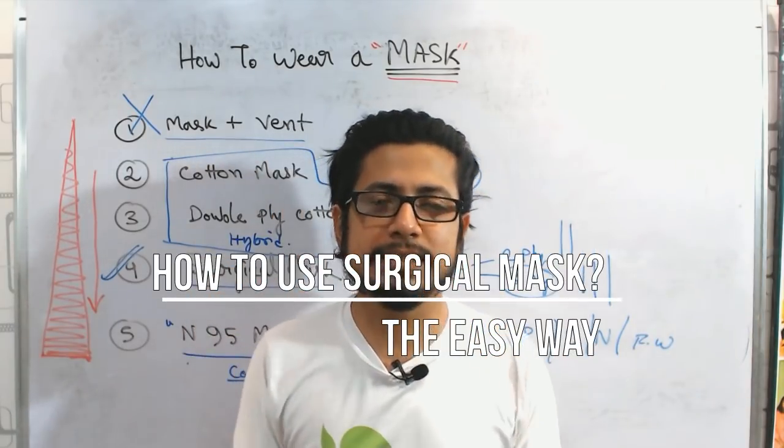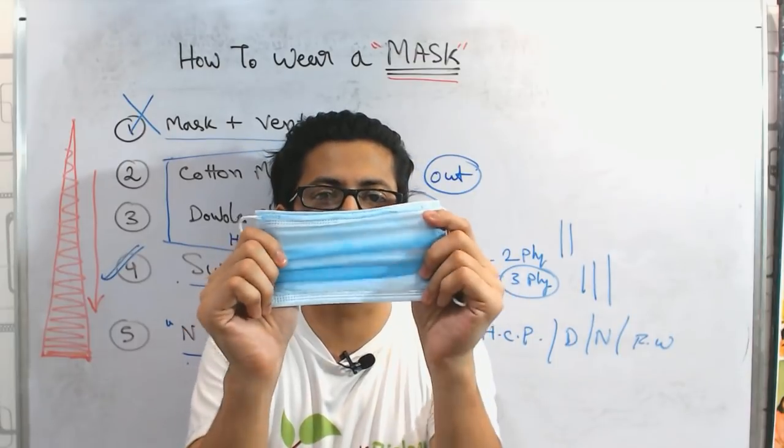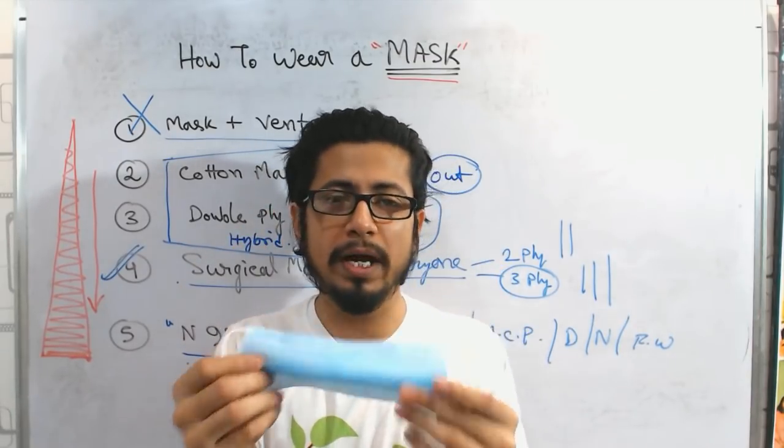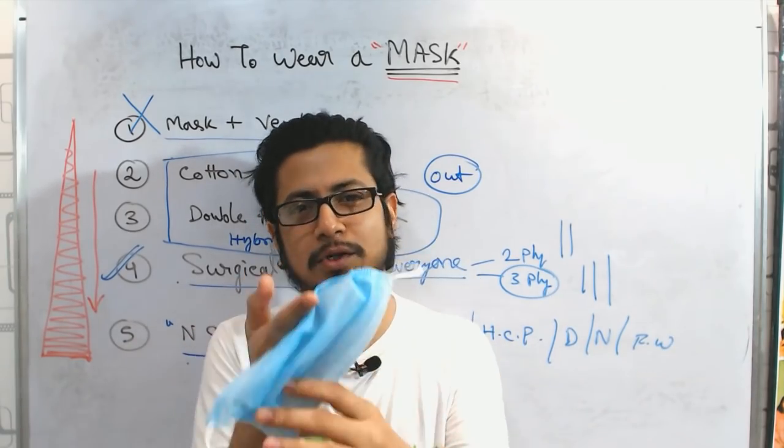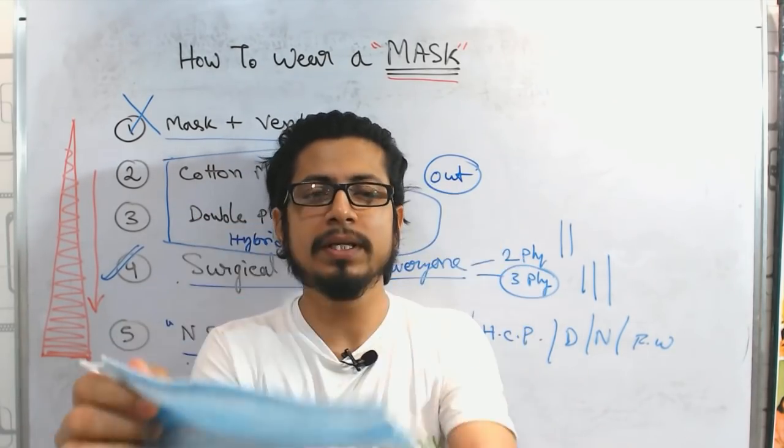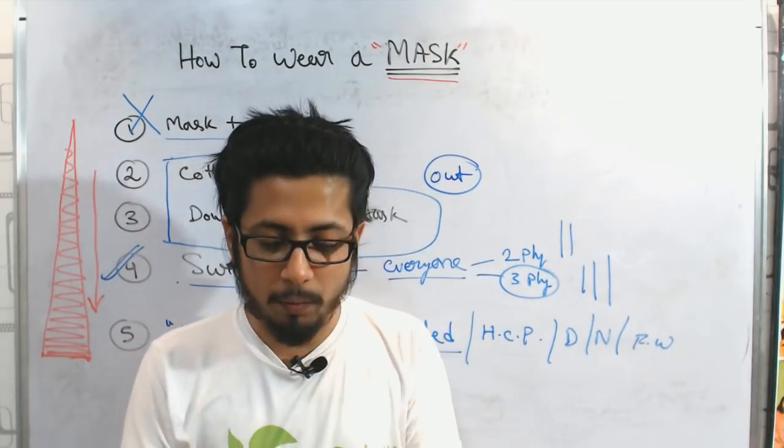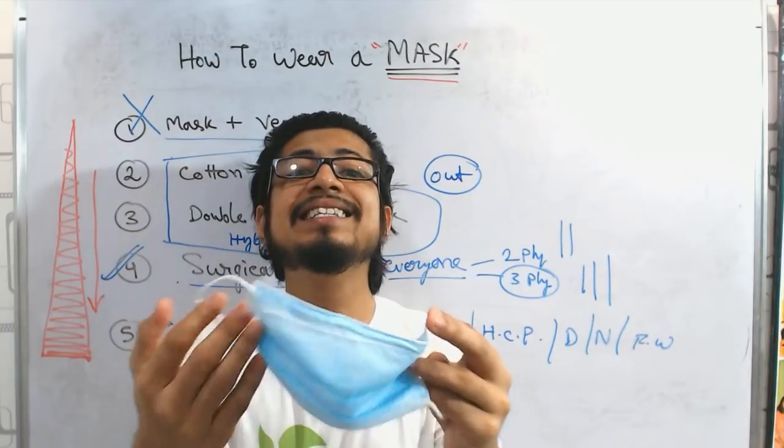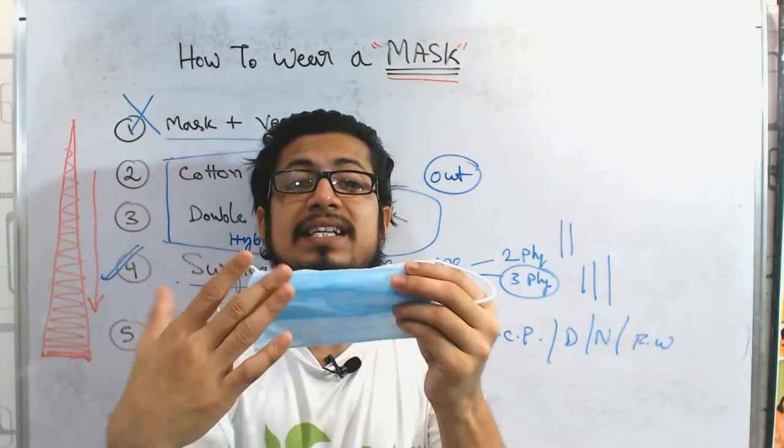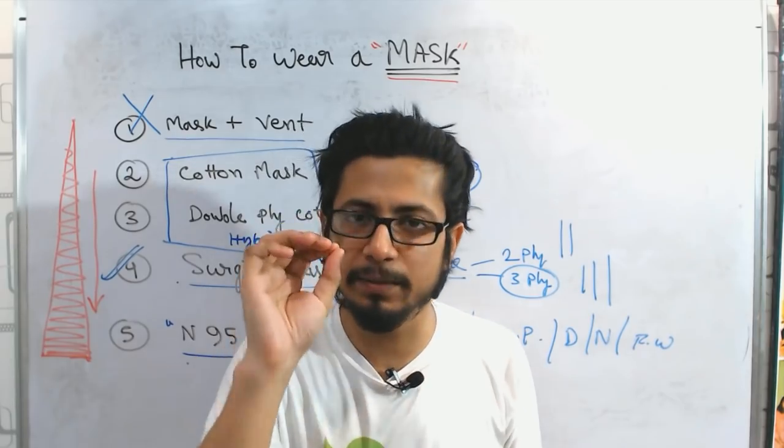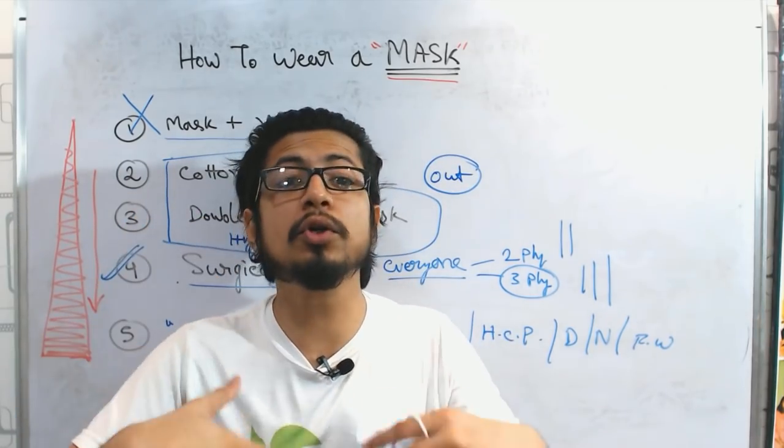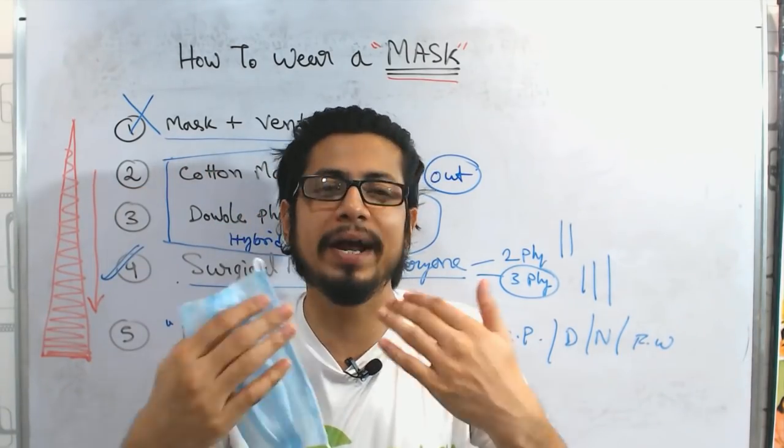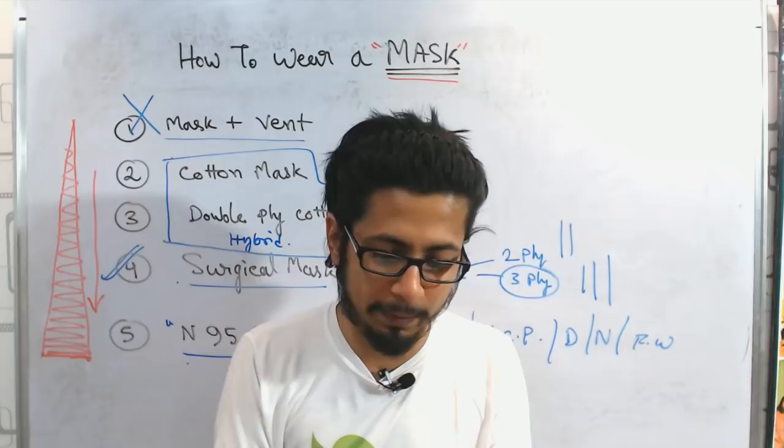So we have this surgical mask and for surgical mask there are two different sides. One is the dark blue color, another one is the light blue color. Generally it should have a blue and a white color, but people confuse and say this is also blue, this is also blue. So this is dark blue and this is light blue or white. Now the white color or light blue color should face your face inside and the dark color blue will face outside. So obviously the simple thing that you need to remember is you need to show off the color, show the blue color to the world. Don't show the white, keep the white to yourself.